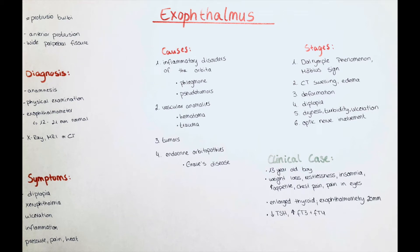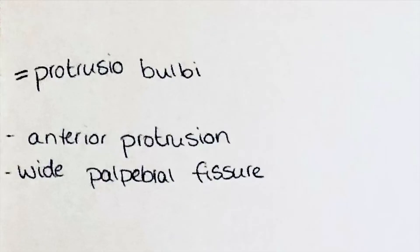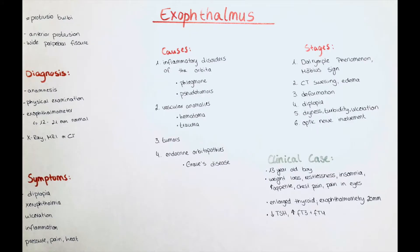Hello and welcome to this channel. My name is Victoria and in today's video we're going to talk about exophthalmos. In these patients the bulbus is protruding anteriorly out of the orbita and the palpable fissure is widened. This is already pretty much the definition of the disorder. It is a symptom rather than its own disease and its underlying cause has to be found and treated.